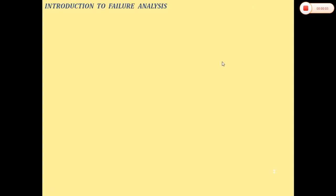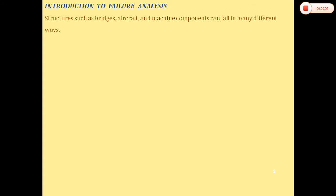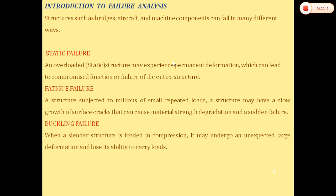Introduction to failure analysis. Structures such as bridges, aircraft, and machine components can fail in many different ways. Engineers have identified three ways of failure: first is static failure, second is fatigue failure, and third is buckling failure.